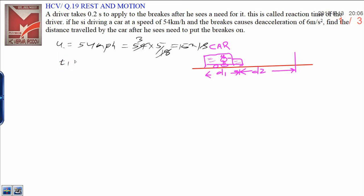Time t1 is equal to 0.2 seconds. You know speed is uniform, therefore acceleration will be 0. So simply distance s1 can be calculated: that is u into t. What is u? That is 15, and time is 0.2. Finally, you will get 3 meters.